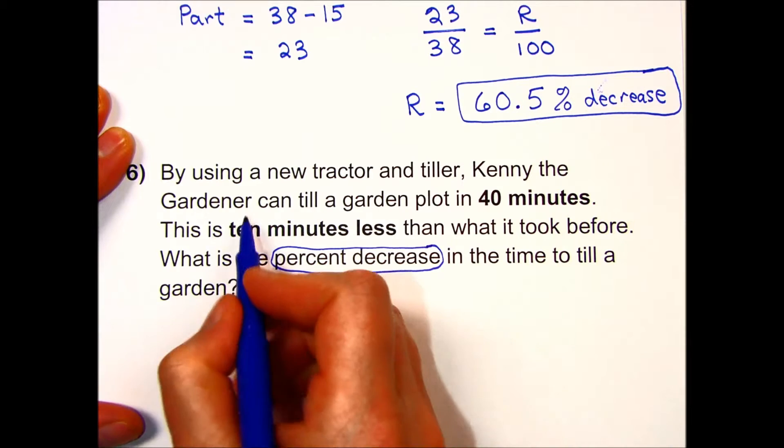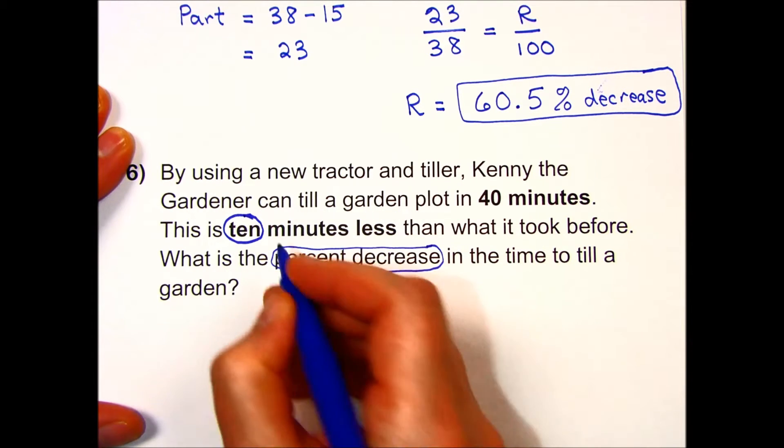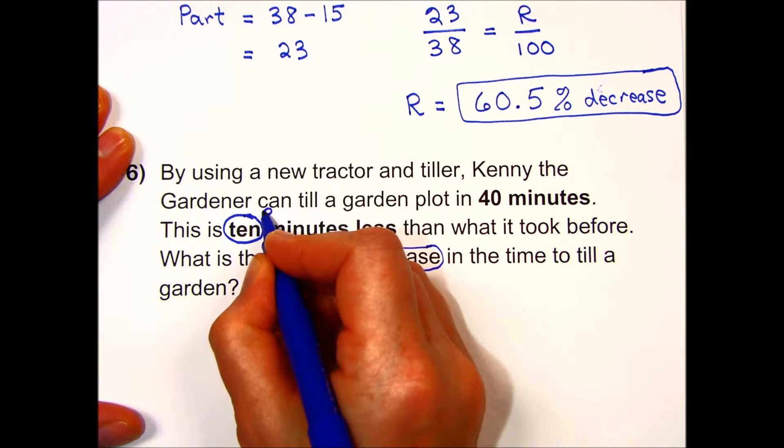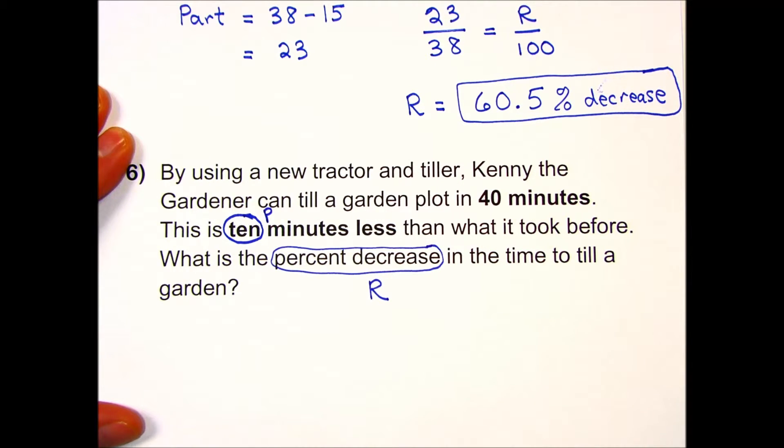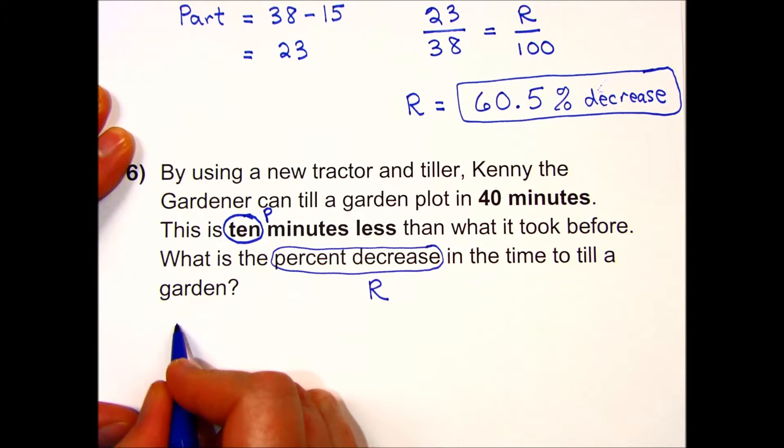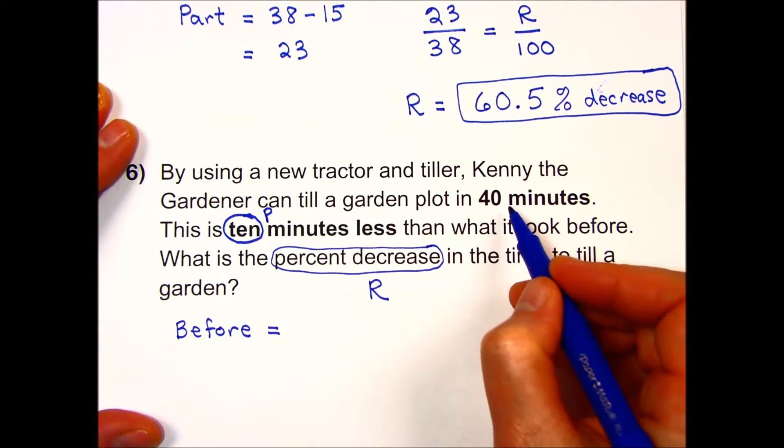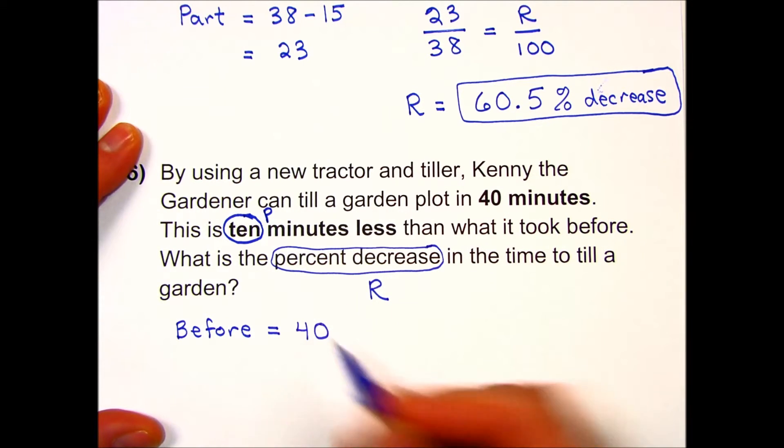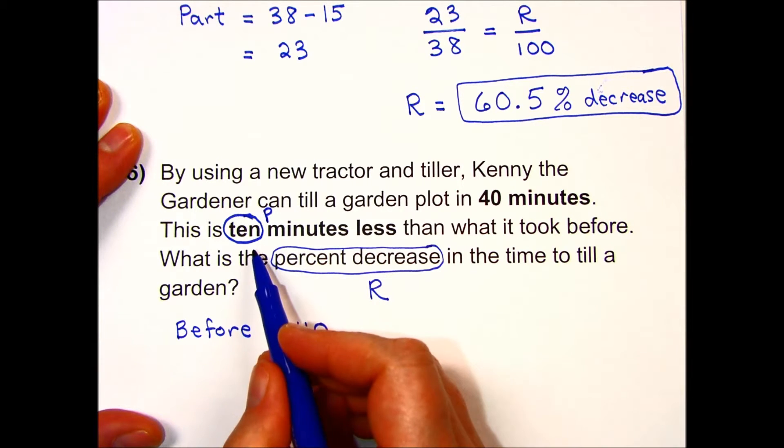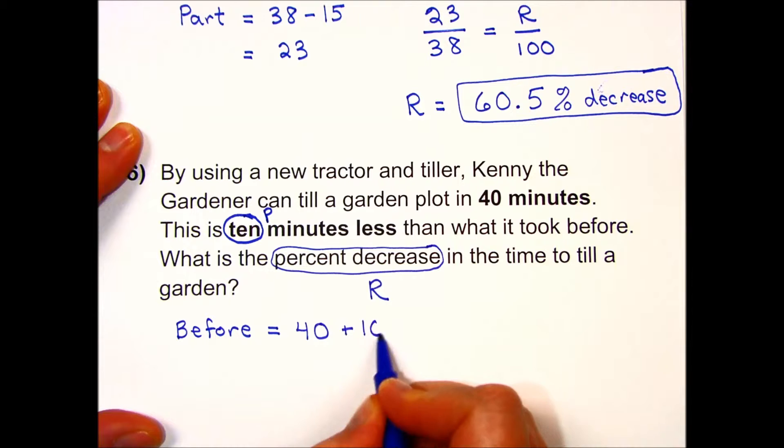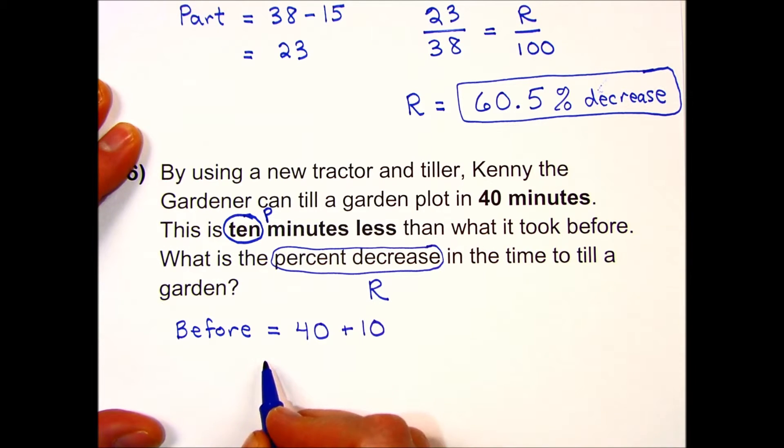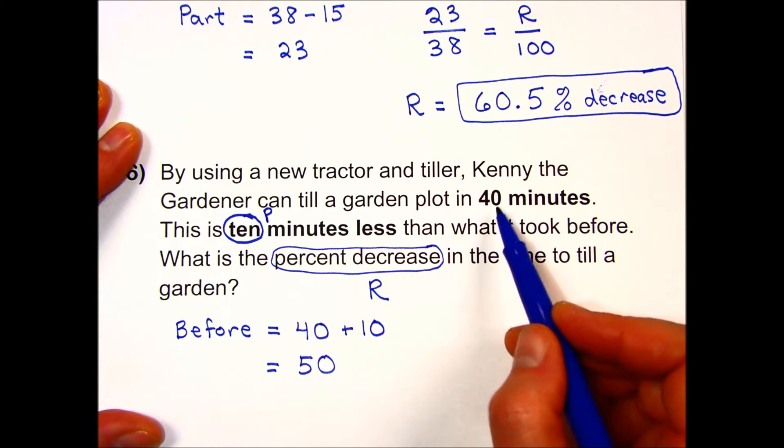They give me the part - the actual change is a decrease of 10 minutes. What I don't have yet is my base, the before. If it currently takes 40 minutes and it used to take 10 minutes more, the base then becomes 50 minutes. Before the change is 50 minutes, 10 minutes less is now 40 minutes.